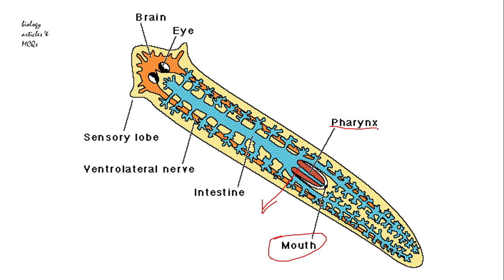The mouth leads to a tube-like structure called the pharynx, and this pharynx leads to the intestine. There are three main branches of the intestine: first is the anterior one, extending towards the head, and the other two are lateral branches extending towards the tail of the planaria.